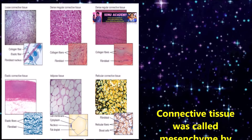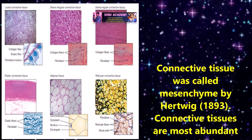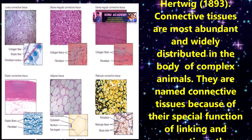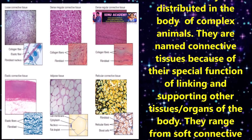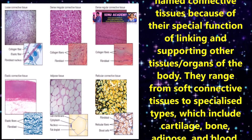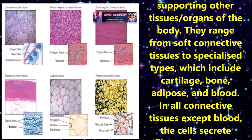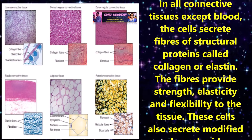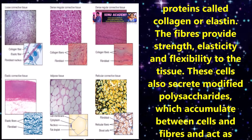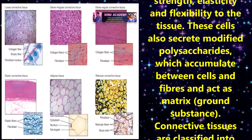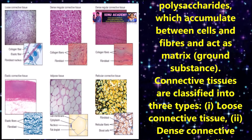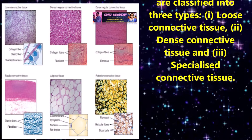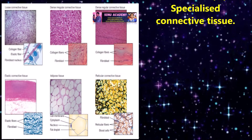Connective tissue was called mesenchyma by Huxley in 1893. Connective tissues are the most abundant and widely distributed tissues in the body of complex animals. They are named connective tissues because of their special function of linking and supporting other tissues and organs of the body. They range from soft connective tissues to specialized types including cartilage, bone, adipose and blood. In all connective tissues except blood, the cells secrete fibrous structural proteins called collagen or elastin, which provide strength, elasticity and flexibility. These cells also secrete modified polysaccharides that accumulate between cells and fibers and act as the ground substance or matrix. Connective tissues are classified into loose connective tissue, dense connective tissue and specialized connective tissue.